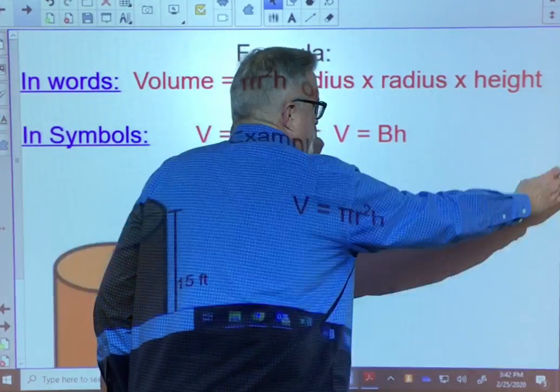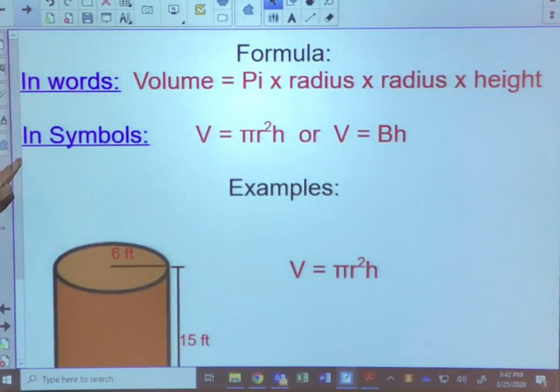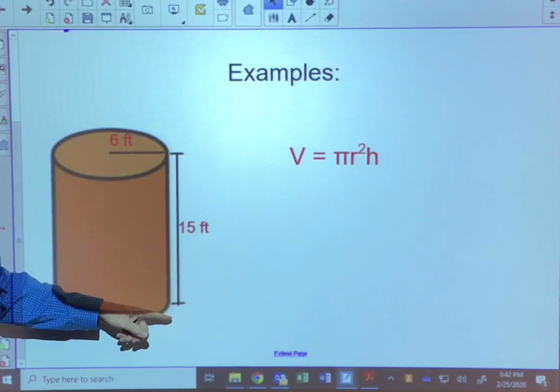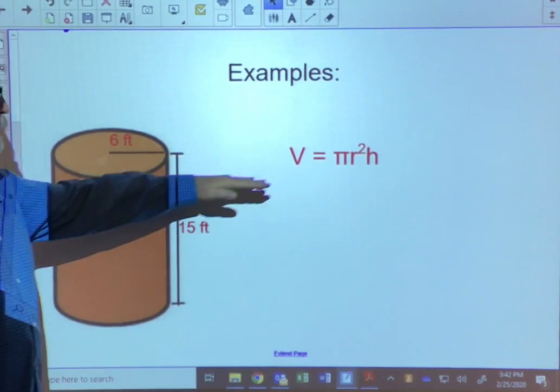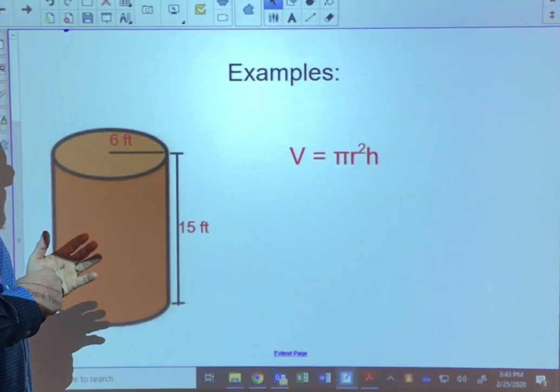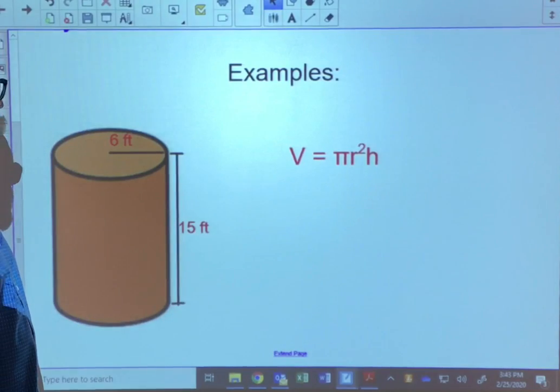Let's take a look at our first example. Our first example is a cylinder that has a radius of 6 feet and a height of 15 feet. We're going to start off with this formula. And so all we have to do is plug in the radius and the height and work the formula out.